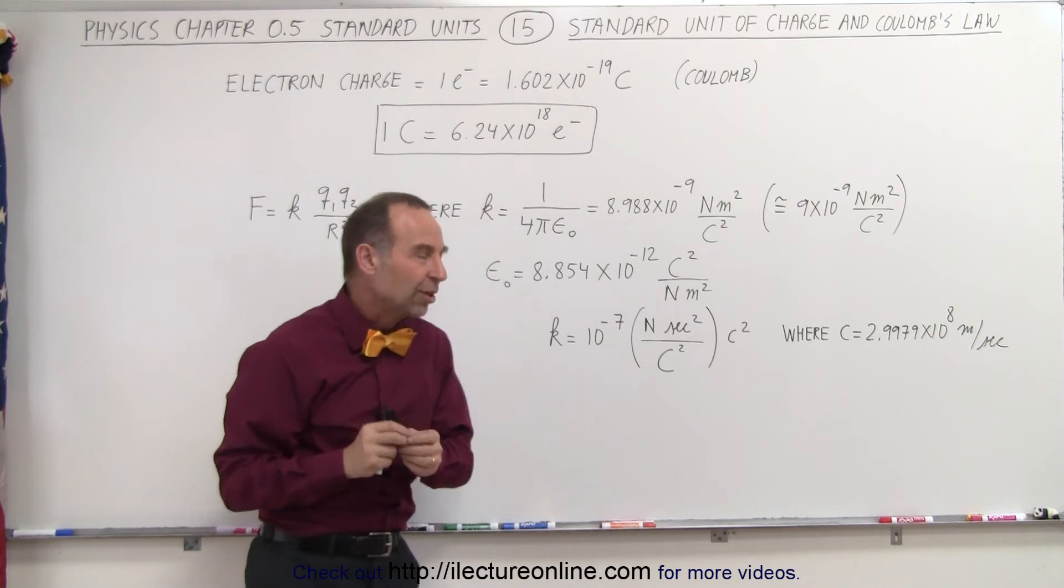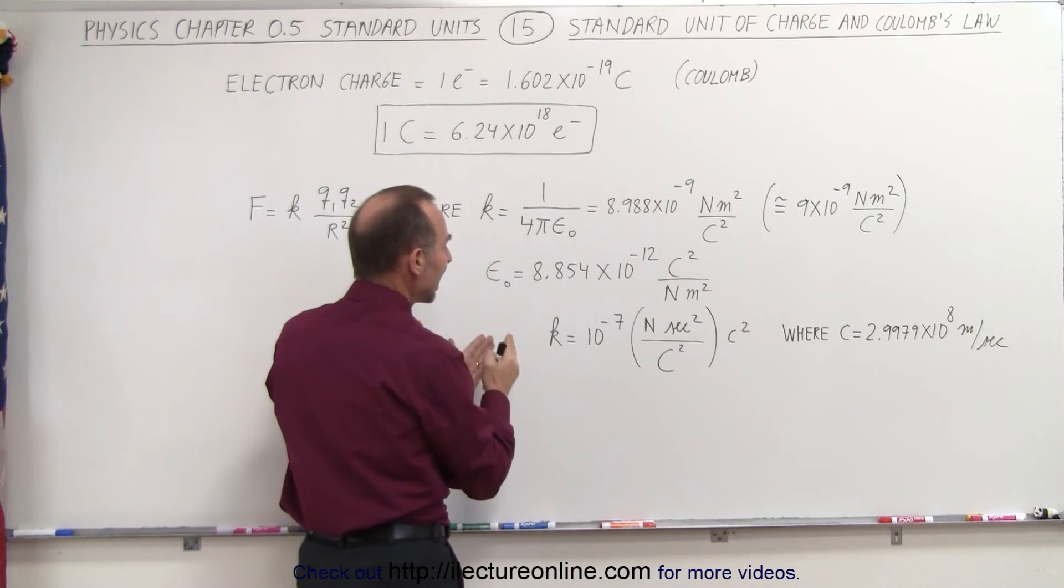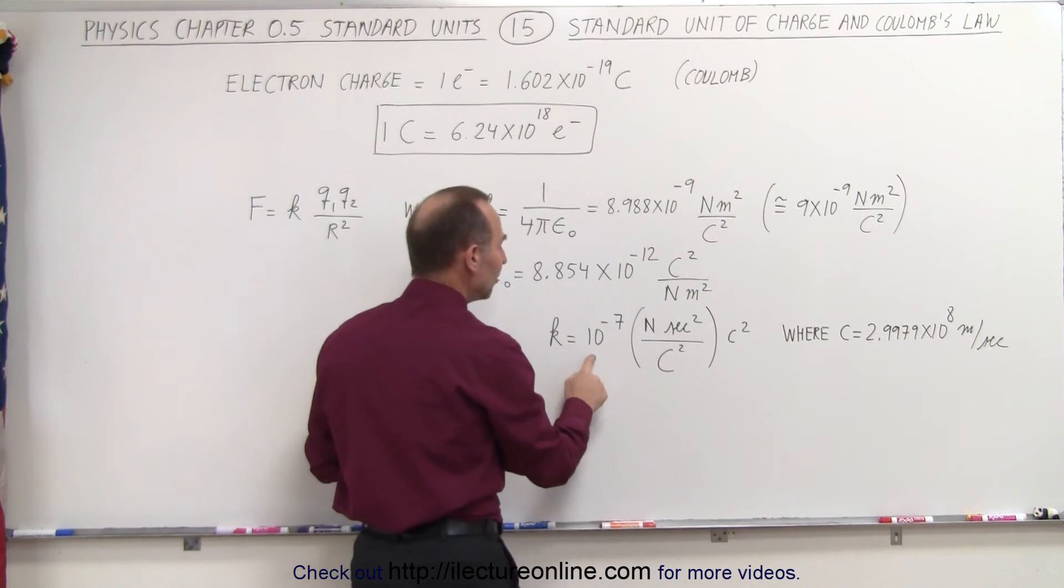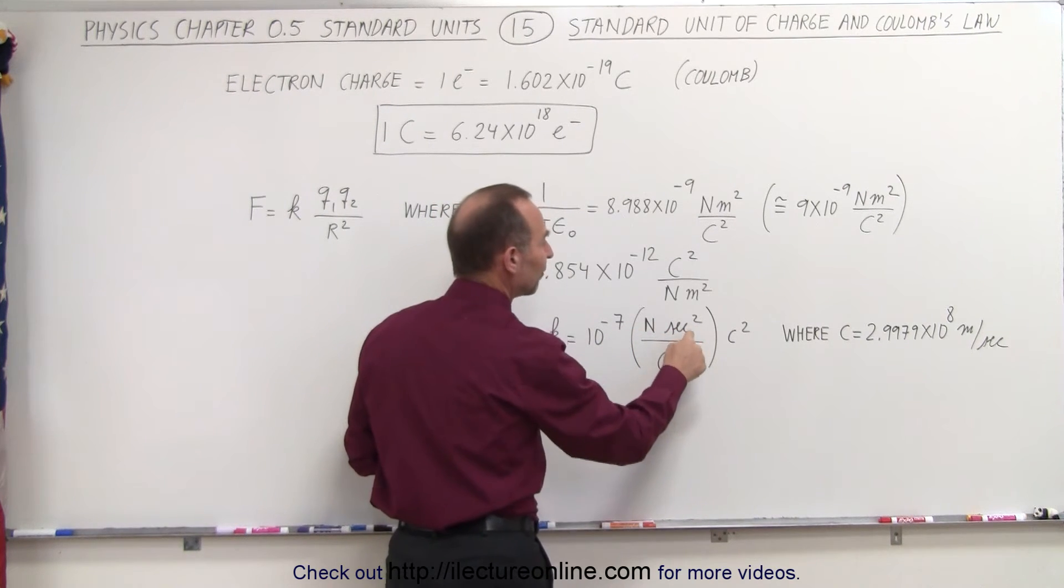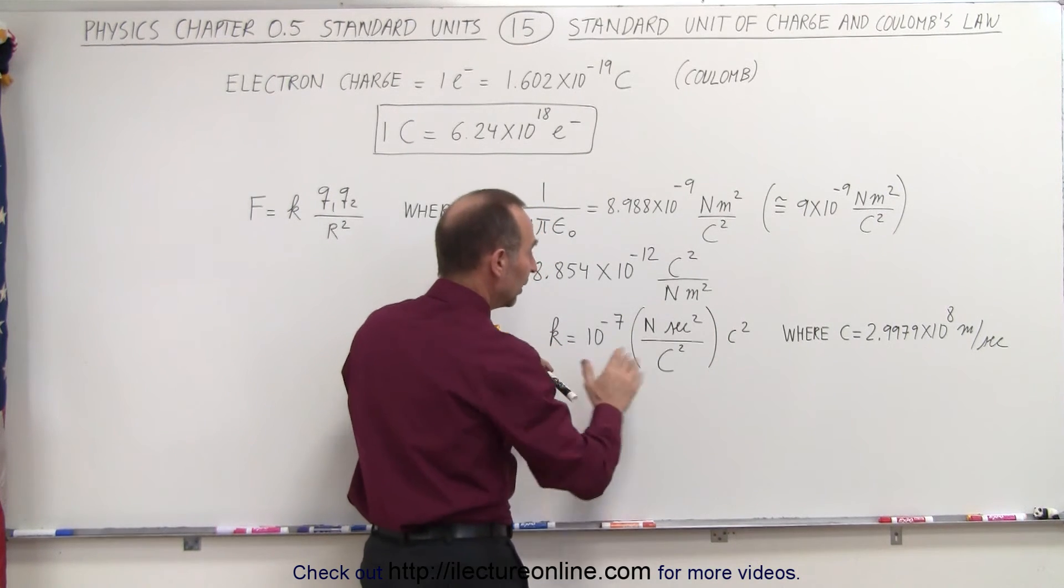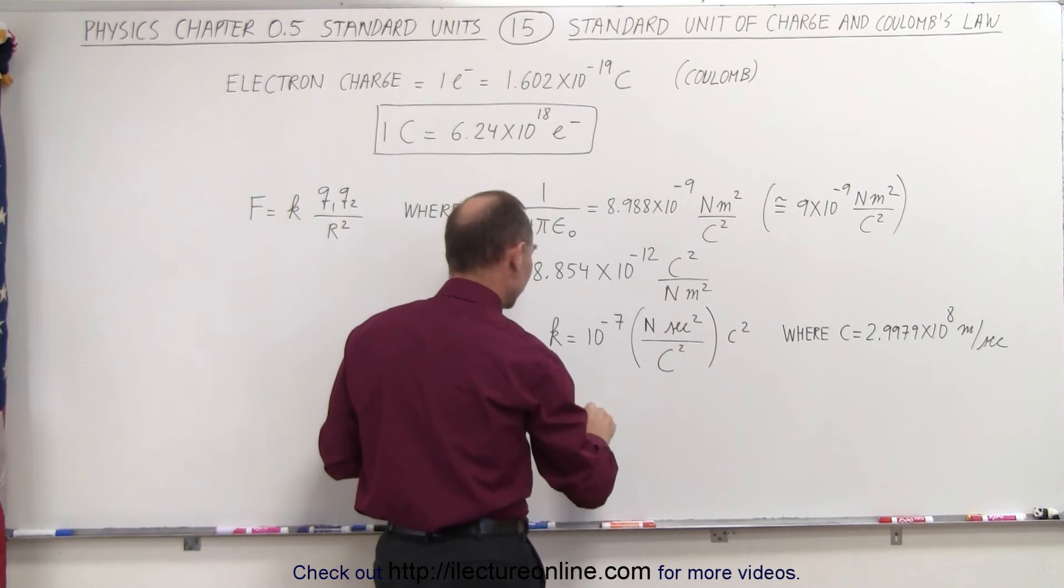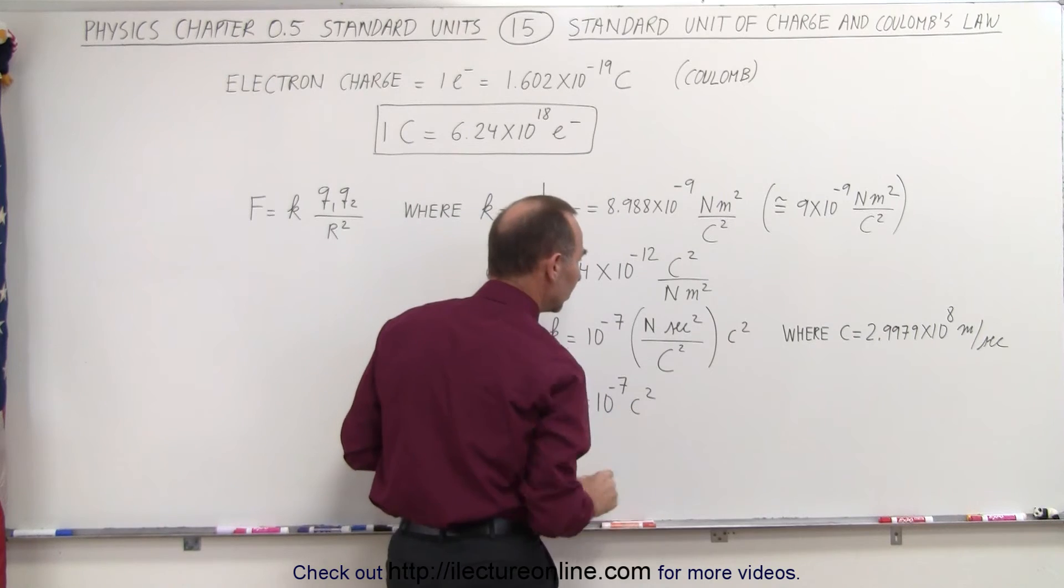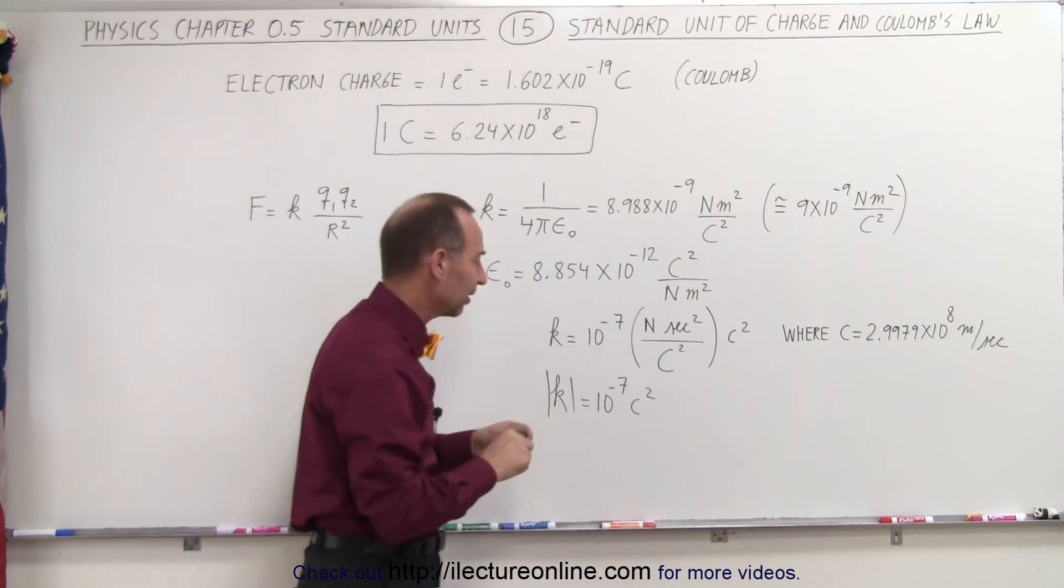What's really interesting is if we now take K, we can have K expressed in terms of the speed of light squared. It is 10 to the minus 7 times newtons second squared divided by coulombs squared times c squared, or if you leave the units off, just numerically, the absolute value of K is equal to 10 to the minus 7 times c squared, where the speed of light is almost 3 times 10 to the 8 meters per second.